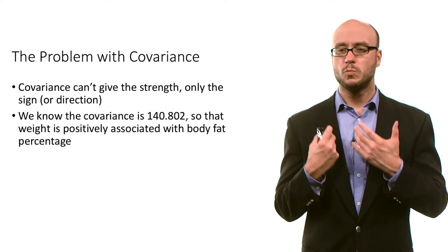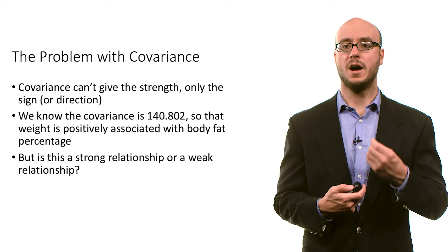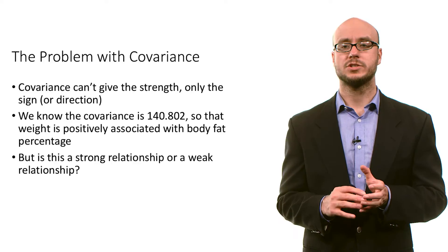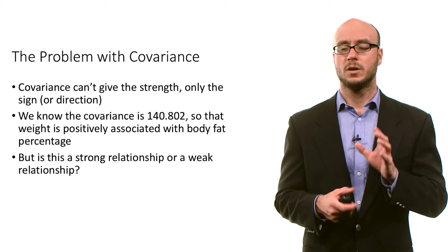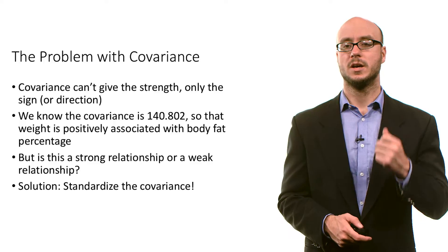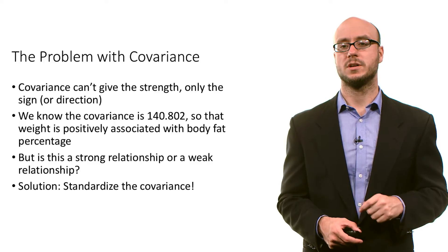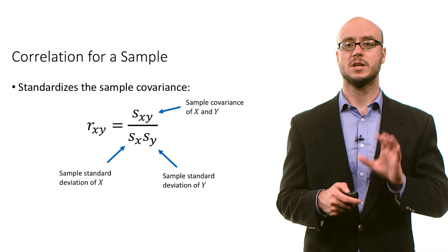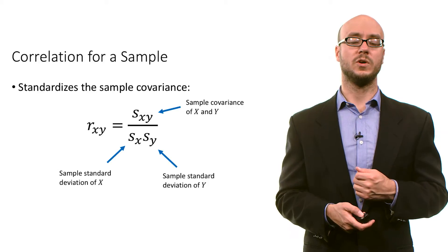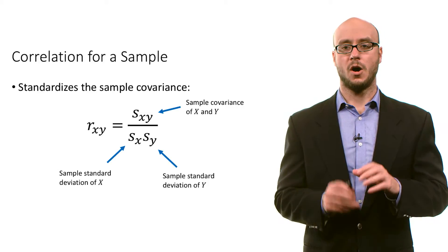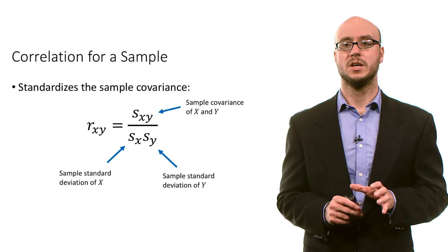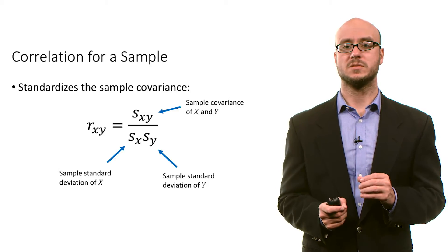But we want a measure of strength — is this a moderate relationship, a weak relationship? The solution is to standardize covariance. We call a standardized version of the covariance correlation. Here's the formula for correlation with a sample of data. All we're doing is standardizing the sample covariance: you take the sample covariance of x and y,